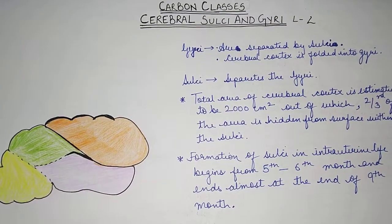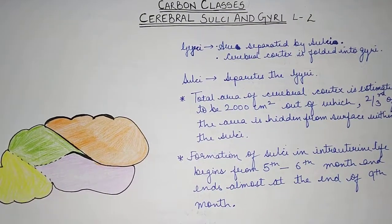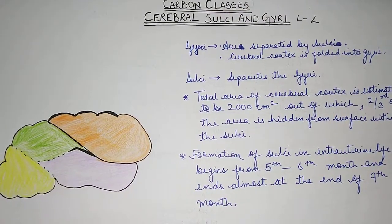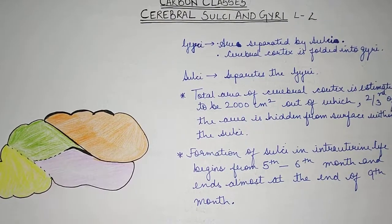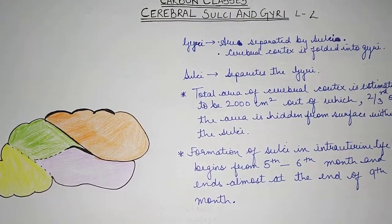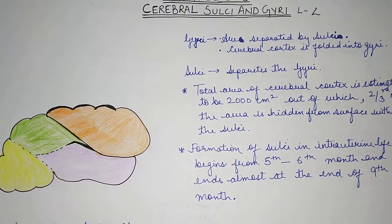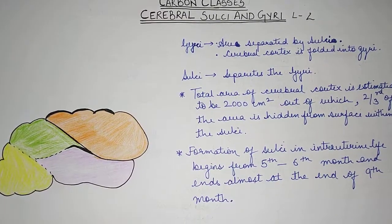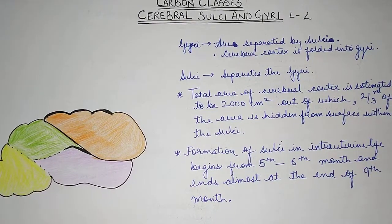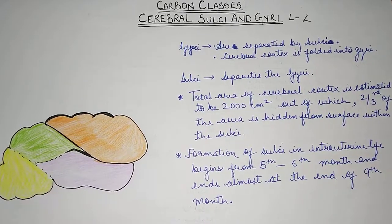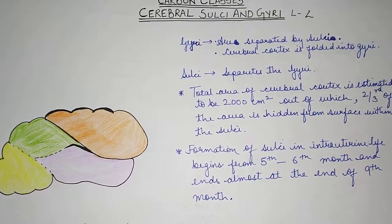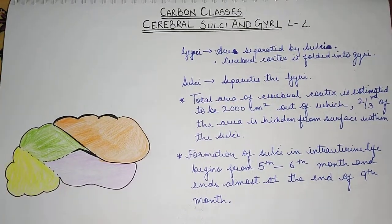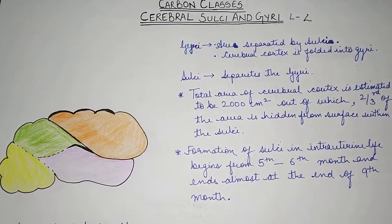Hi friends, welcome back to the Carbon Classes channel. Today we are going to talk about the cerebral sulci and gyri. This is lecture two of three in the cerebrum playlist. In this lecture we are going to talk about the gyri and sulci, specifically those present in the frontal lobe, and also cover what gyri and sulci are.